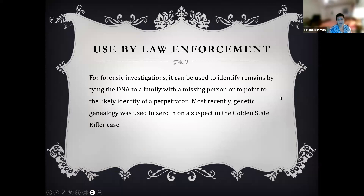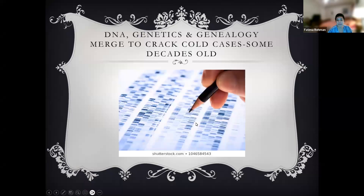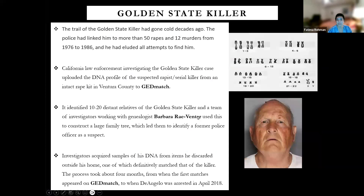The most recently high-profile example of this was the Golden State Killer case. This case had been cold for many decades — the crimes were mostly committed between 1976 and 1986, about 30 to 40 years before it was solved. Police had linked approximately 50 rapes and 12 murders from that period to the same culprit, but had no idea who it was.